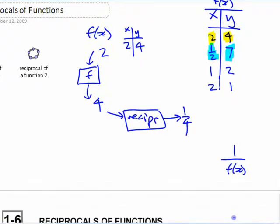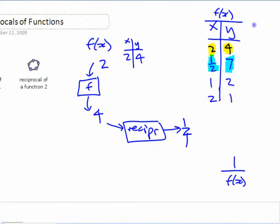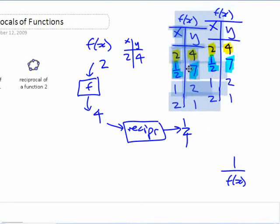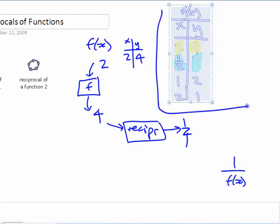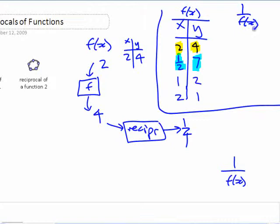So instead of this table, if we do a table for 1 over f of x, what's in our table for 1 over f of x?